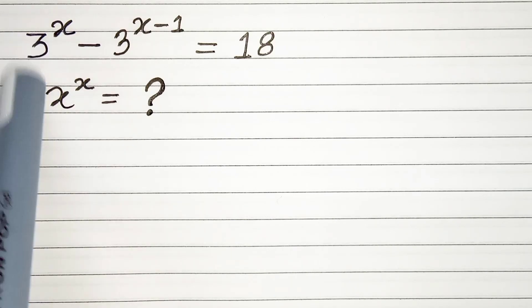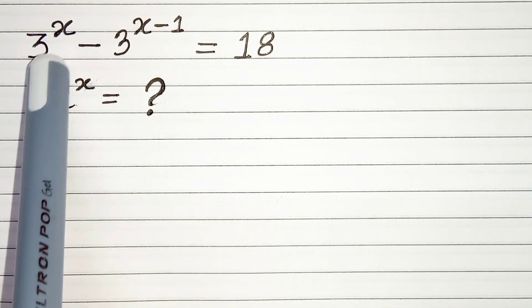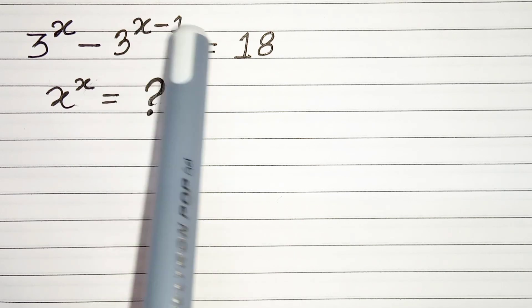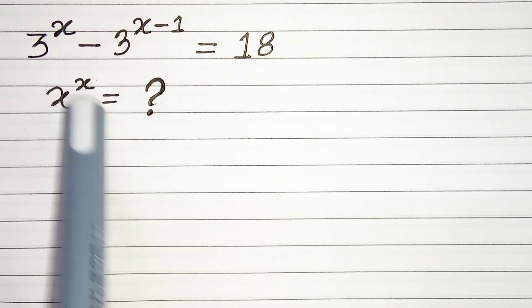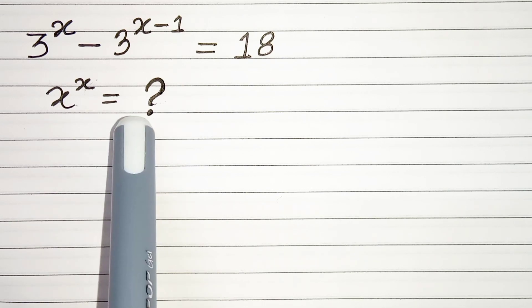Hello everyone, in this video we have this exponential equation: 3 to the power x minus 3 to the power x minus 1 equals 18. We have to find x to the power x. So let's start.